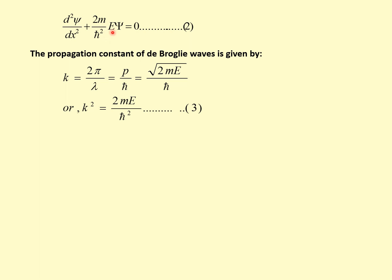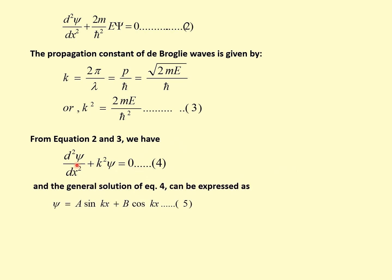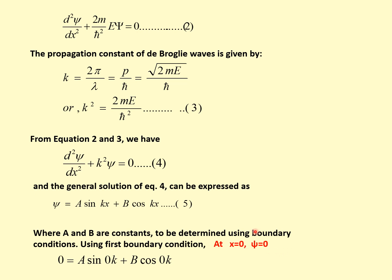We define k² = 2mE/ħ², where k is the propagation vector k = 2π/λ, so k = √(2mE)/ħ. The equation becomes d²ψ/dx² + k²ψ = 0. This is a second-order differential equation whose general solution is ψ = A sin(kx) + B cos(kx). We find the coefficients A and B using the boundary conditions. Applying the first boundary condition ψ = 0 at x = 0 gives B = 0, so ψ = A sin(kx).